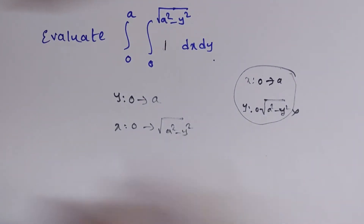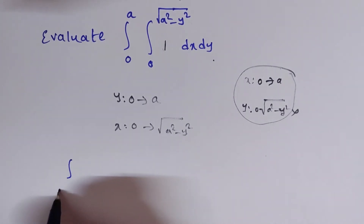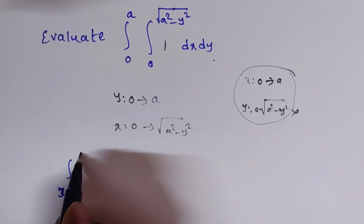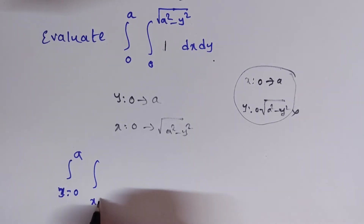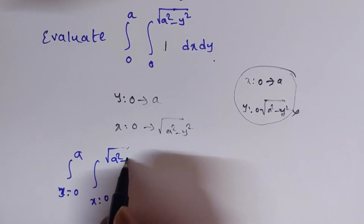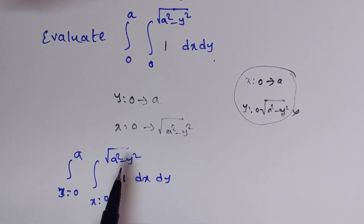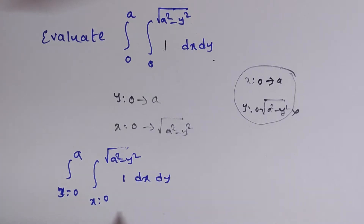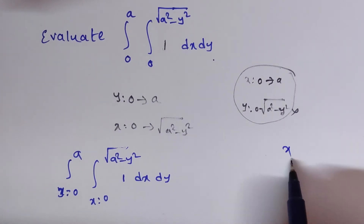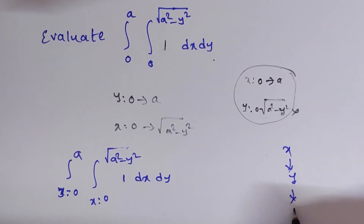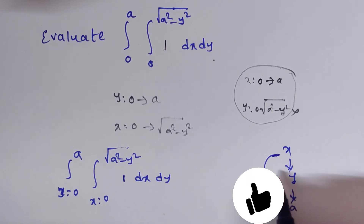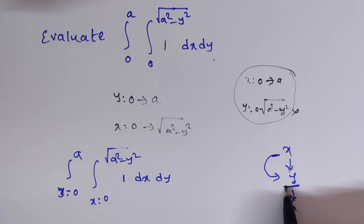Now, writing the limits: y is from 0 to a and x is from 0 to √(a² − y²), integrand 1, dx dy. The reason for this ordering is that you must first integrate with respect to the dependent variable. Here x is a function of y and y is a constant, so first integrate with respect to x, then apply the upper and lower x-limits to get a function of y, and finally integrate with respect to y substituting the constant limits.